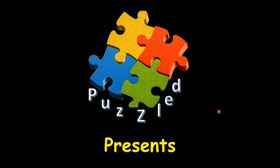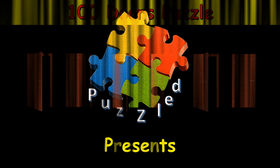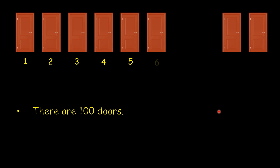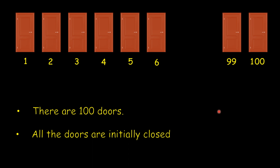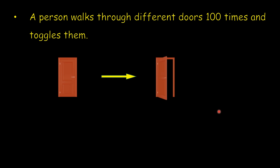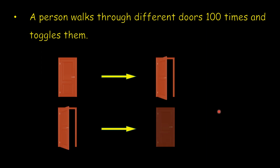Hello friends, we are back with a new puzzle called the Hundred Doors puzzle — it's a tough one. There are 100 doors numbered 1 through 100, and initially all the doors are closed. A person walks through all or some of the doors 100 times, and whichever door the person walks through, he toggles it: if the door was closed he opens it, and if it was open he closes it.